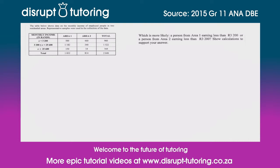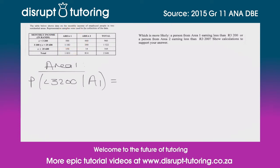Show calculations to support your answer. Let's start off with area one. The probability of someone earning less than three thousand two hundred rand per month, given that they come from area one — so we've got one thousand eight hundred and thirty two people in that area, and of those one thousand eight hundred and thirty two, only five hundred earn less than three thousand two hundred rand per month. So that's going to be 500 over 1832, and that gives us a probability of 27.29%.